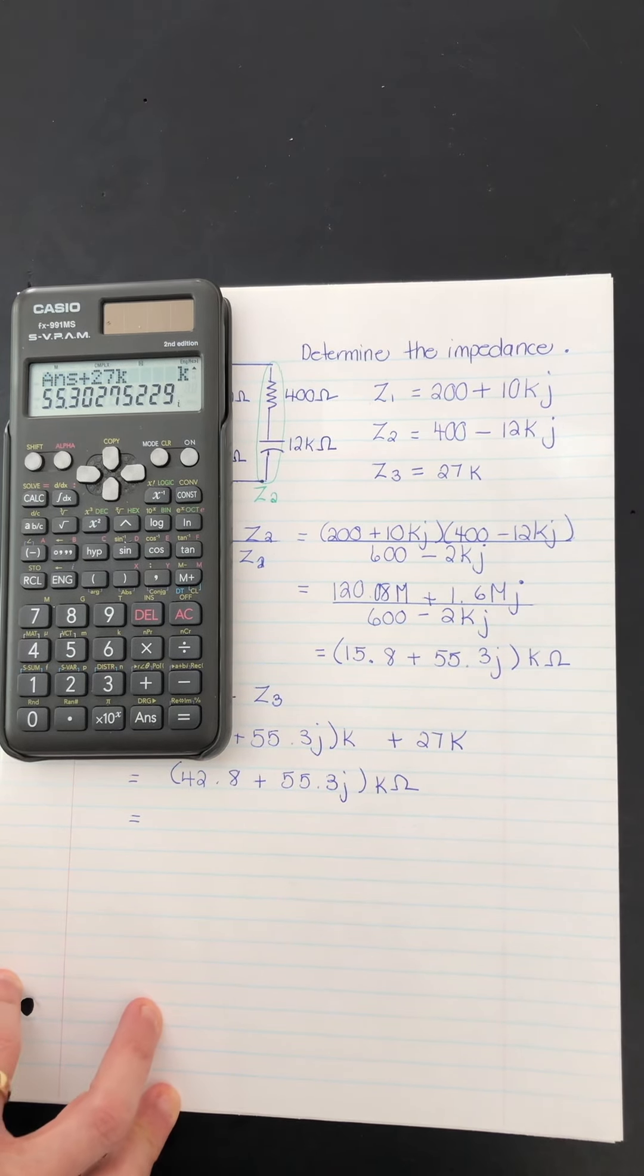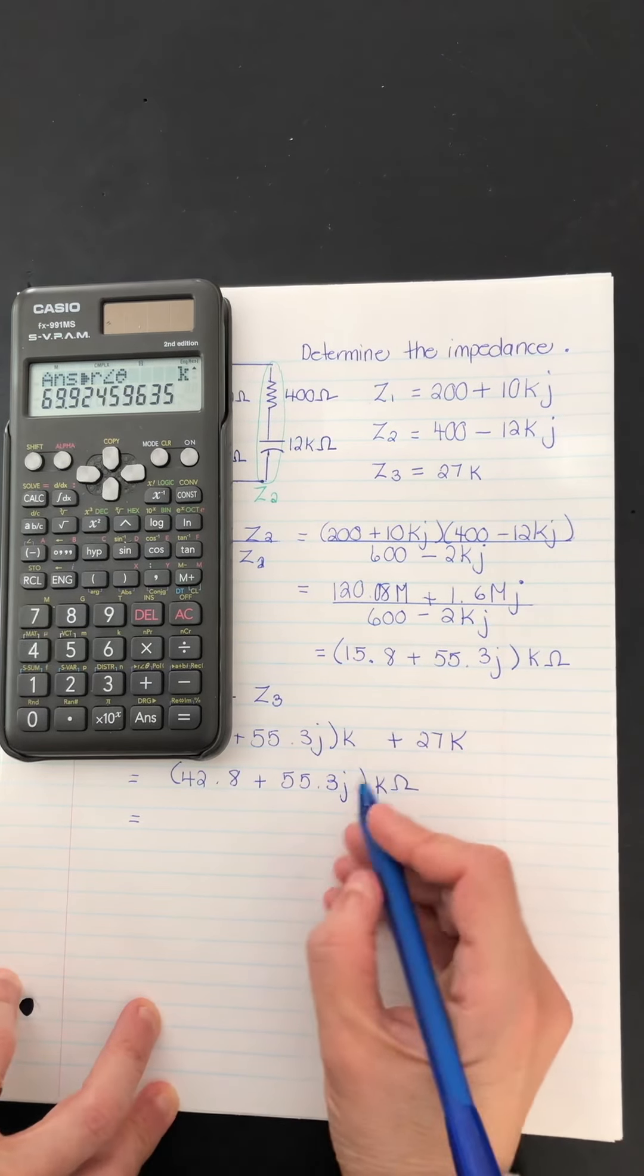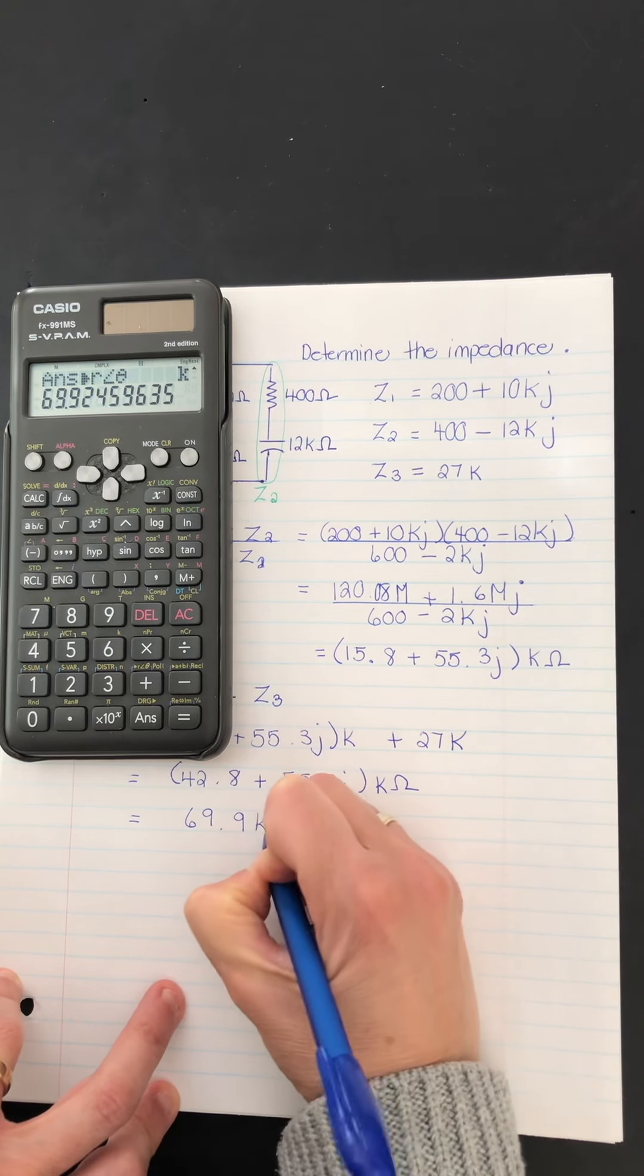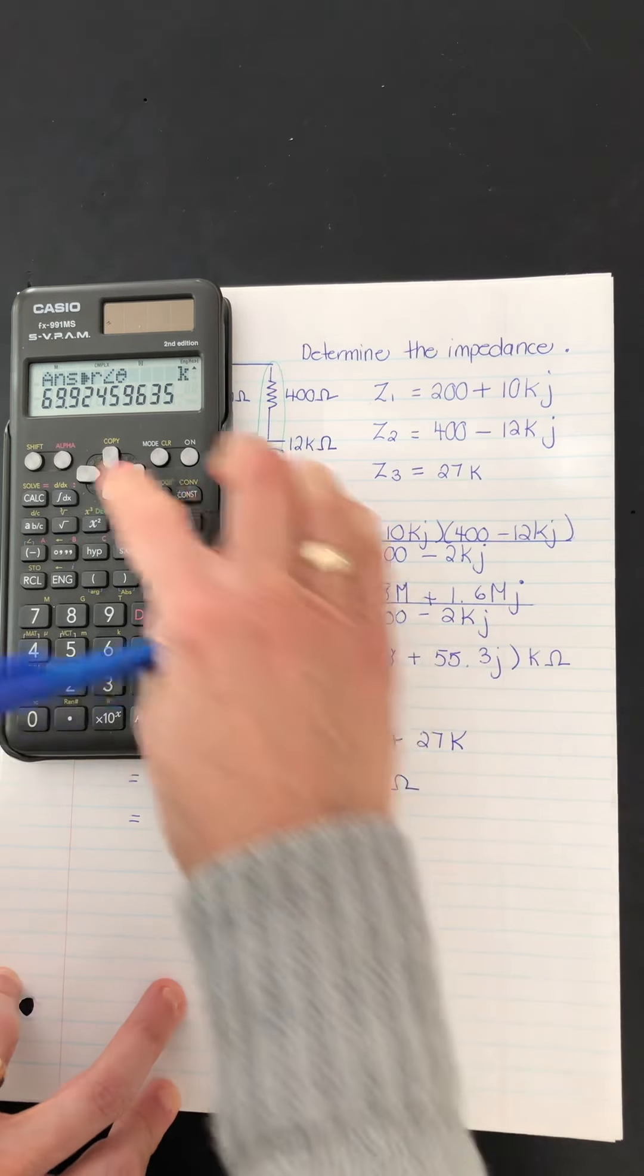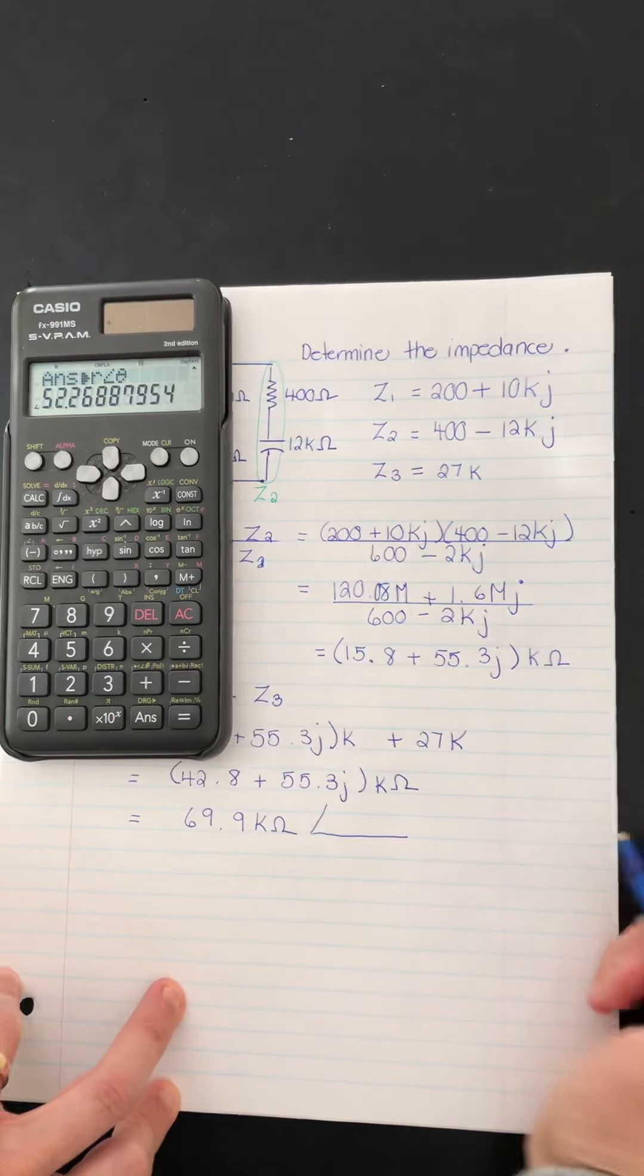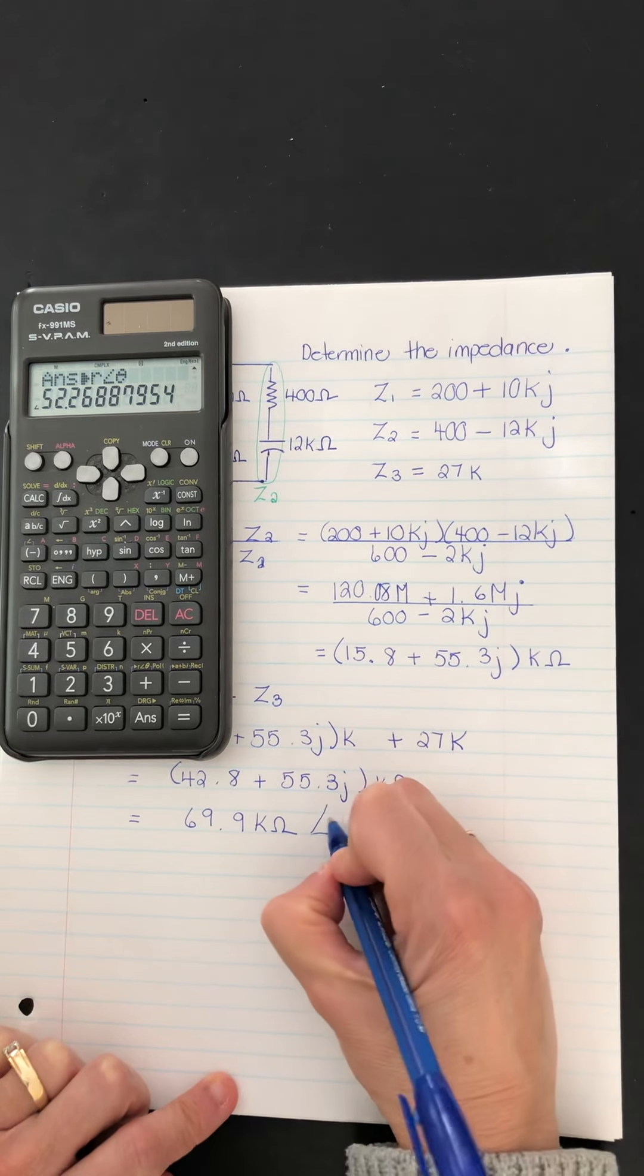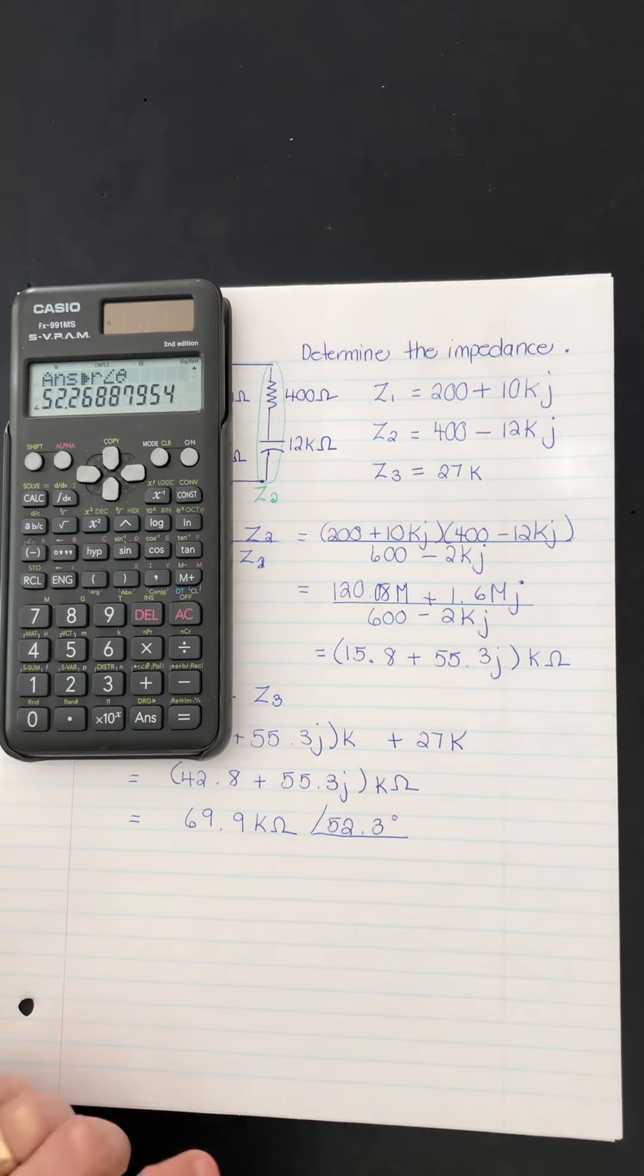So then I'm going to go shift plus. Shift plus equals. So this would be 69.9 kilo ohms. And what about the angle? 52.3 degrees. And there you have it.